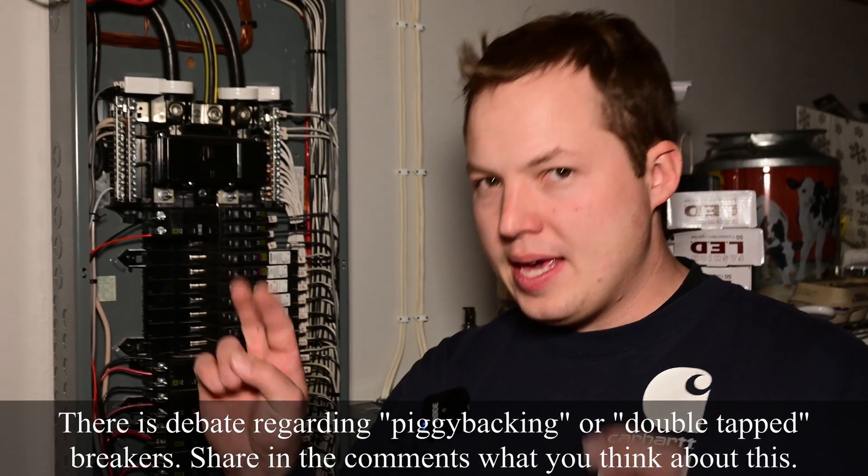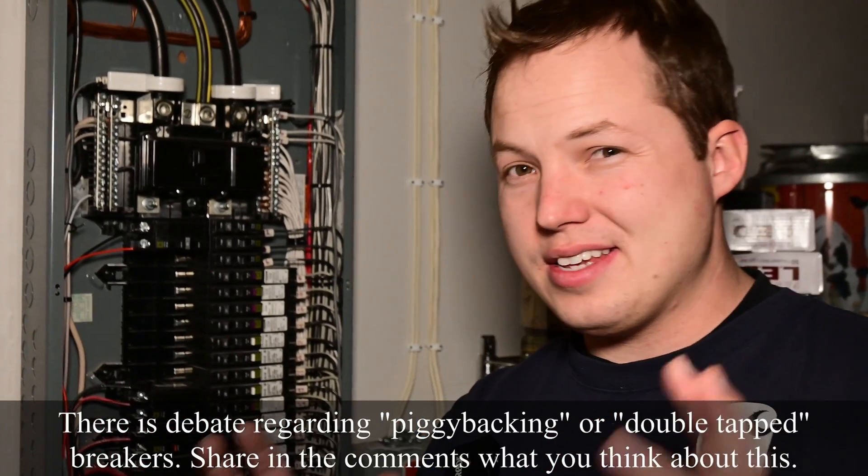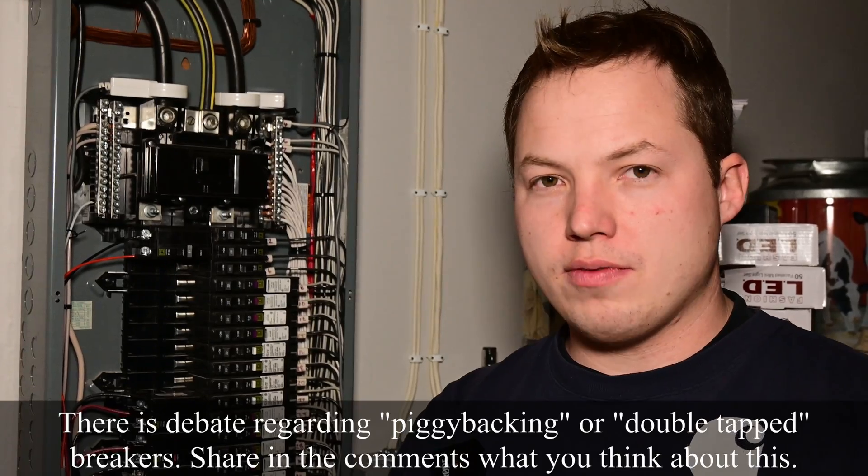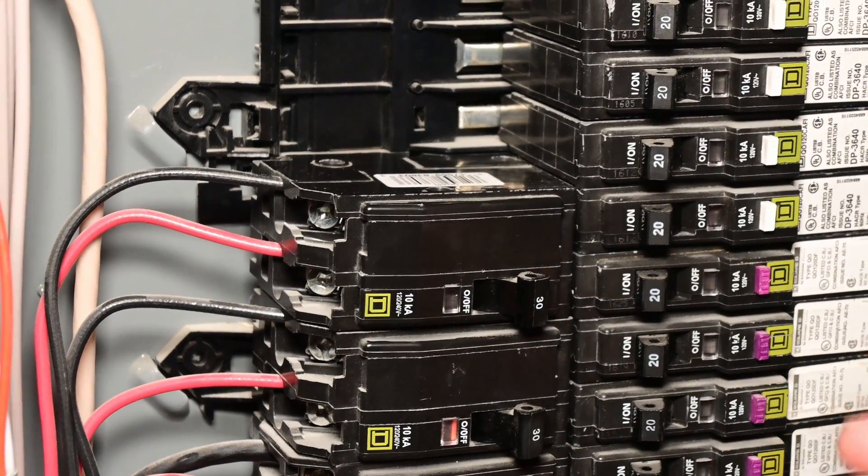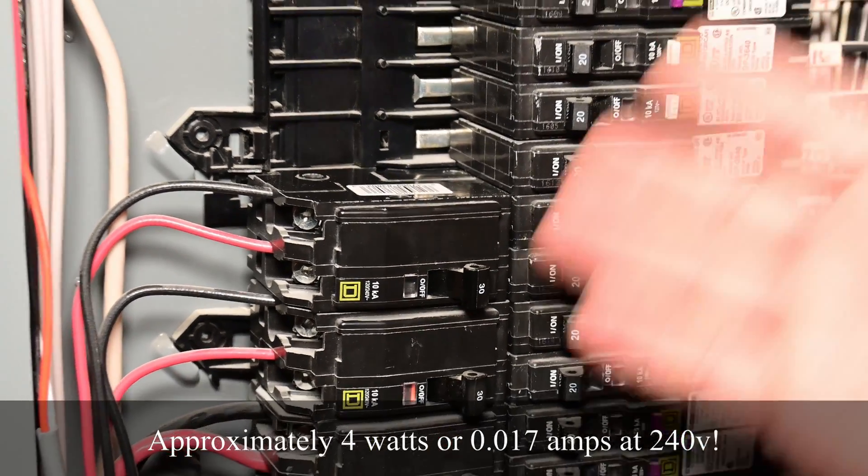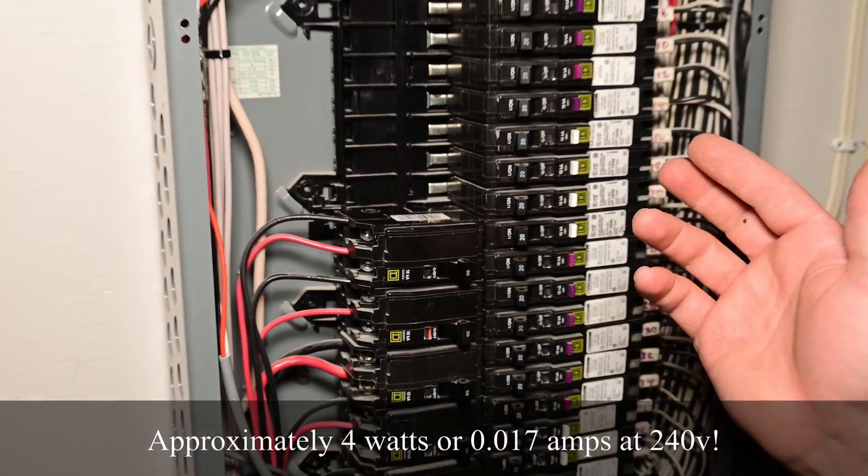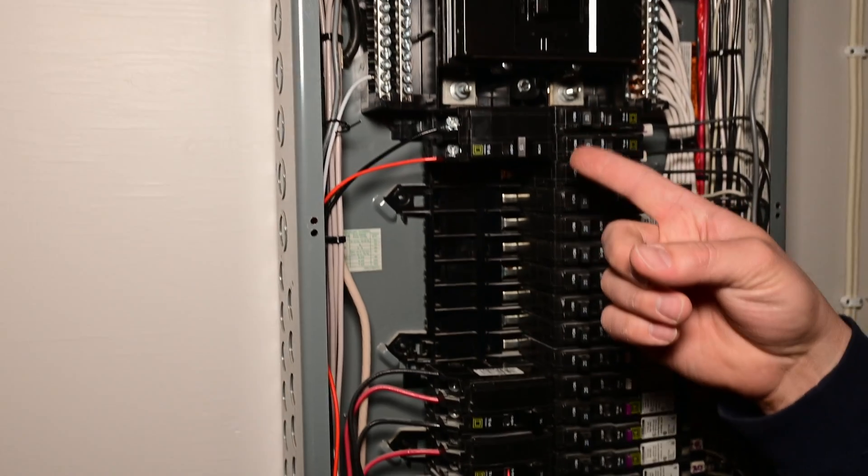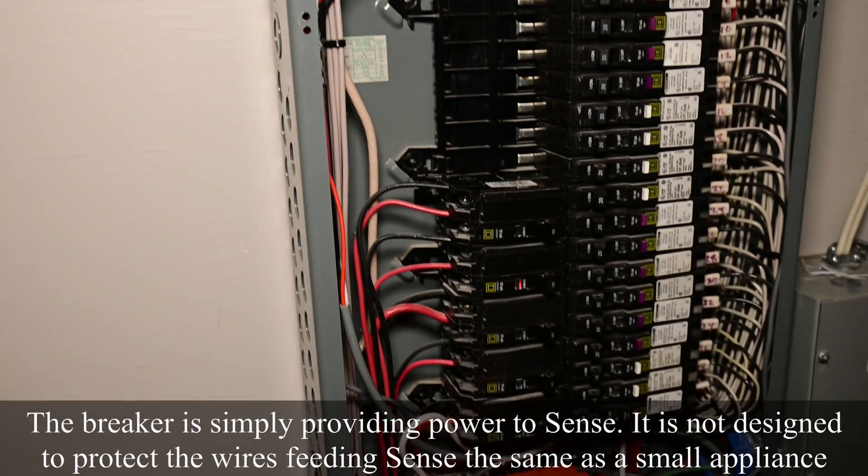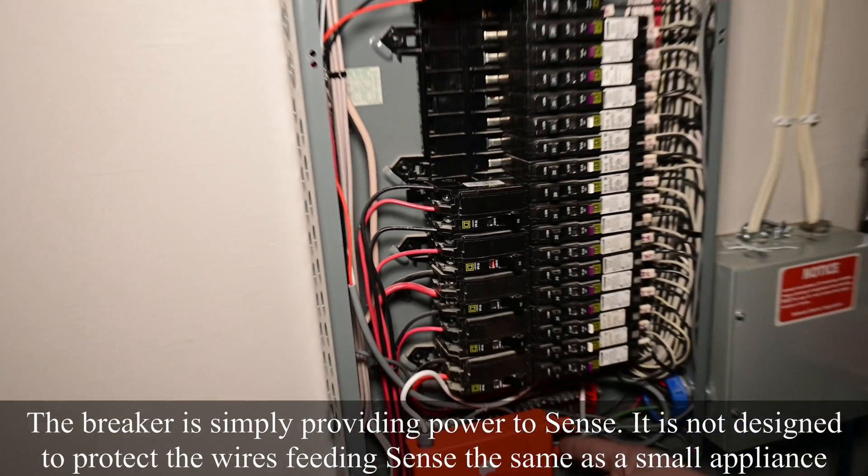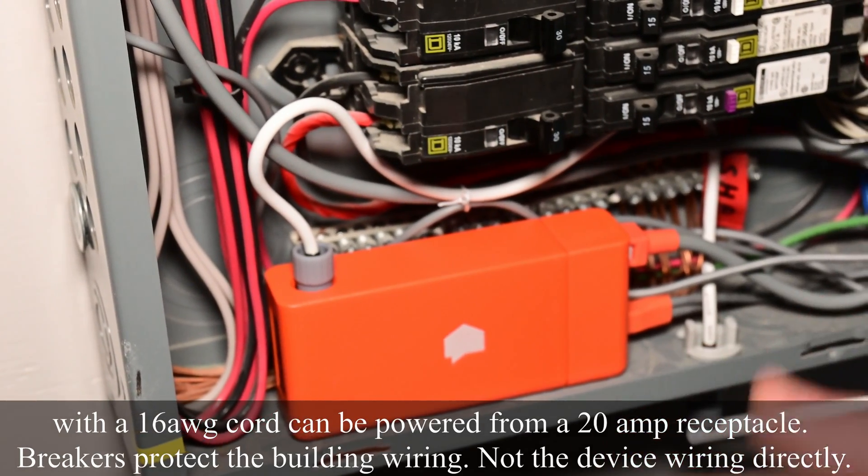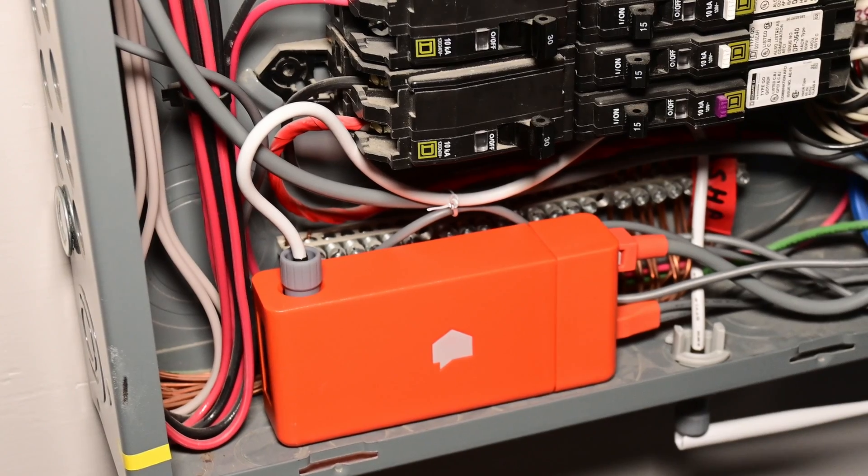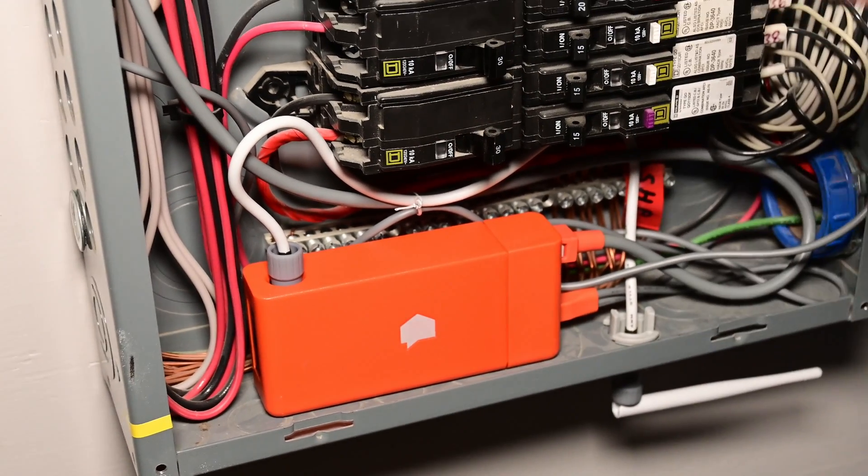If your panel is totally filled with breakers already, you can technically piggyback the Sense Energy Monitor onto another existing 240-volt circuit. Right down here, we have a 30-amp circuit, which is for an electric dryer. The Sense Energy Monitor uses a tiny amount of power, so that additional load on that breaker is not really going to change anything. You can't even get breakers that are small enough to protect these wires for the Sense Energy Monitor. This product has went through a bunch of different testing to be approved to be installed inside of a panel like this. So for safety considerations, this meets code for this device to be inside of a panel.